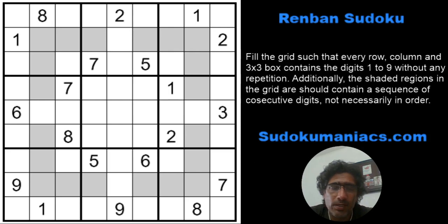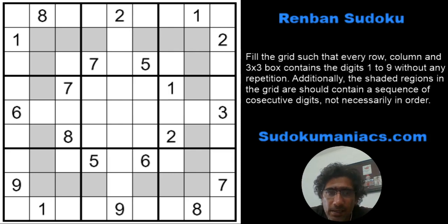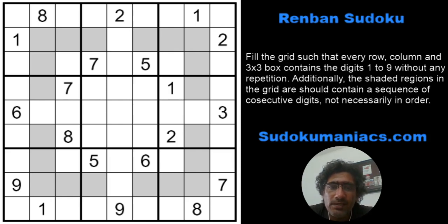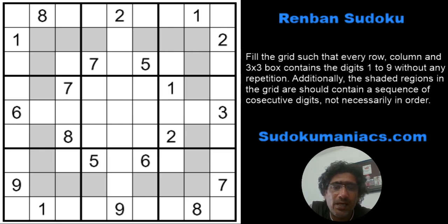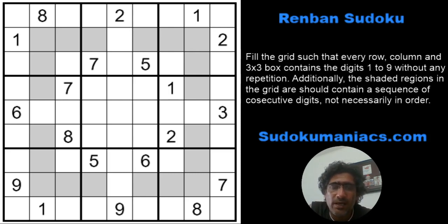The rules of classic Sudoku apply. Additionally, we see certain regions in grey marked on the grid. Each region will contain a set of consecutive digits, but they are not necessarily in order — it can be in any order.